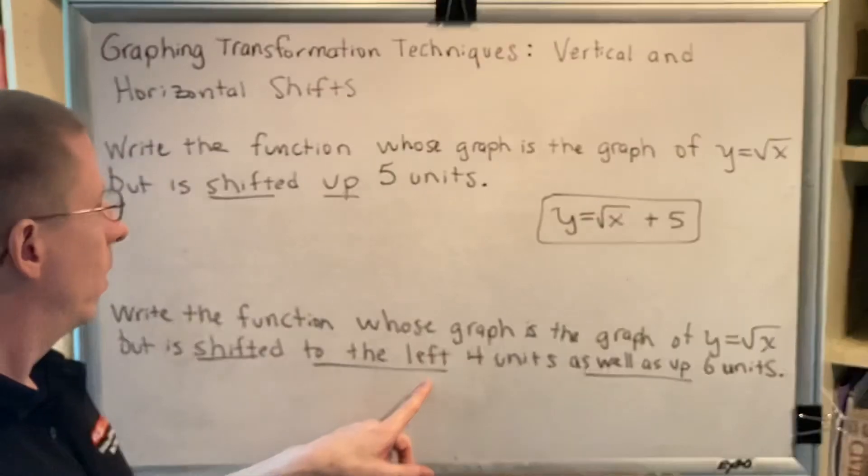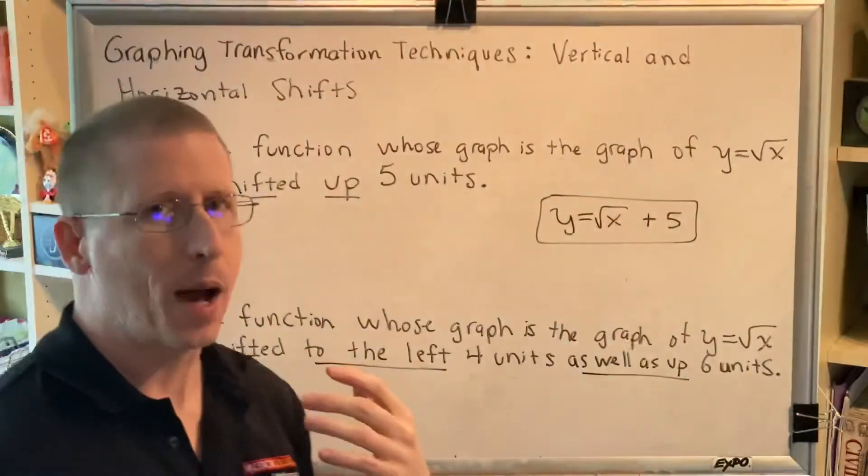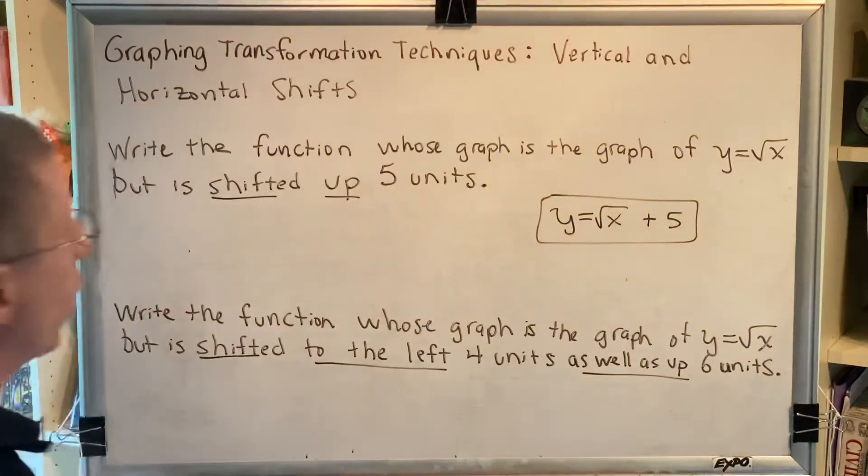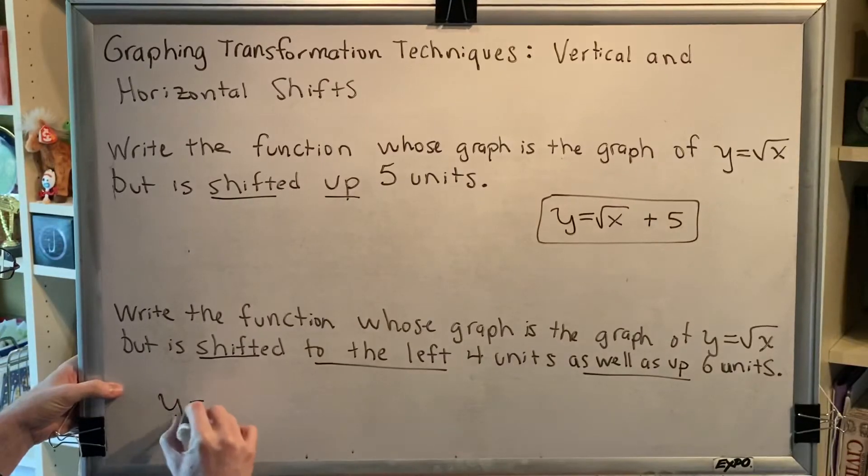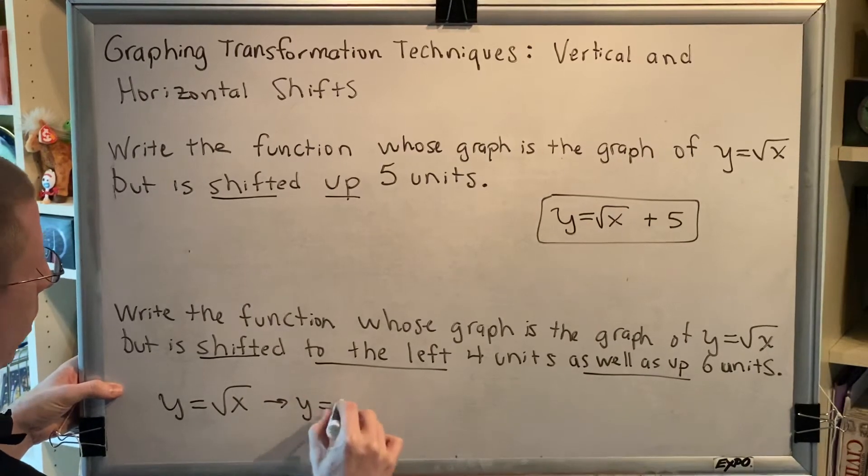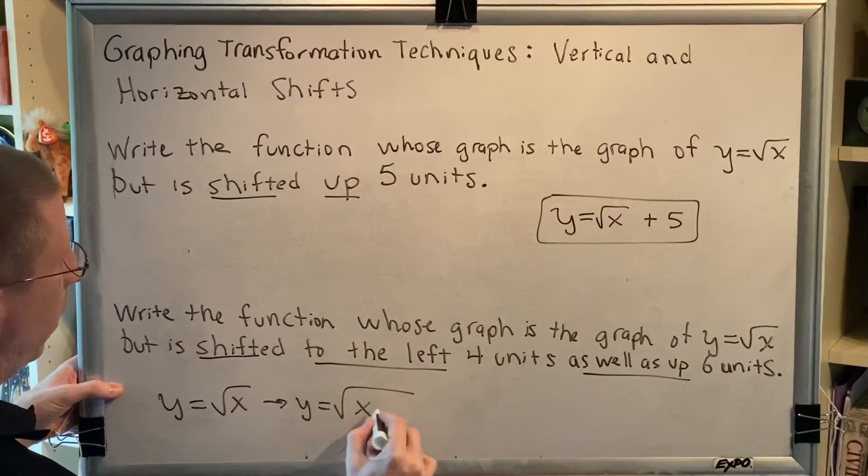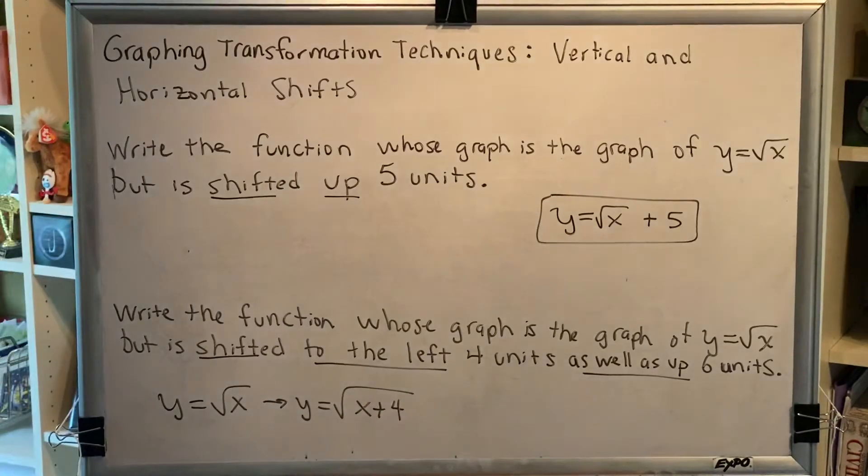Normally you would think left, that would be subtraction, but in fact it's the opposite of that, it is addition. So that means that we are going to replace this x inside the radical with x plus four because of this to the left four.